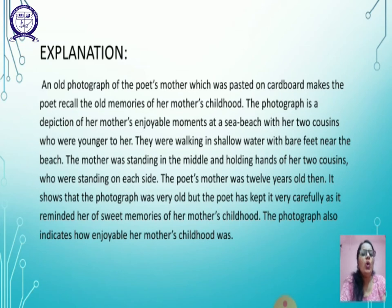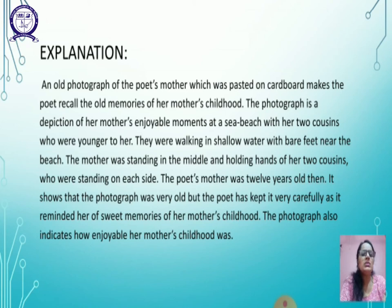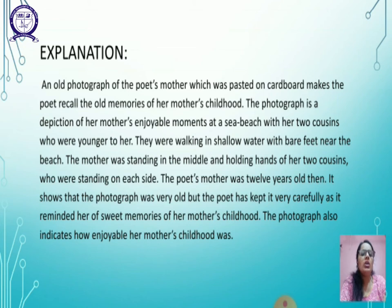An old photograph of the poet's mother, which was pasted on cardboard, makes the poet recall the old memories of her mother's childhood. The photograph is a depiction of her mother's enjoyable moments at a sea beach with her two cousins, who were younger to her. They were walking in shallow water with bare feet near the beach. The mother was standing in the middle, holding hands of her two cousins on each side. The poet's mother was 12 years old then. The photograph also indicates how enjoyable her mother's childhood was.